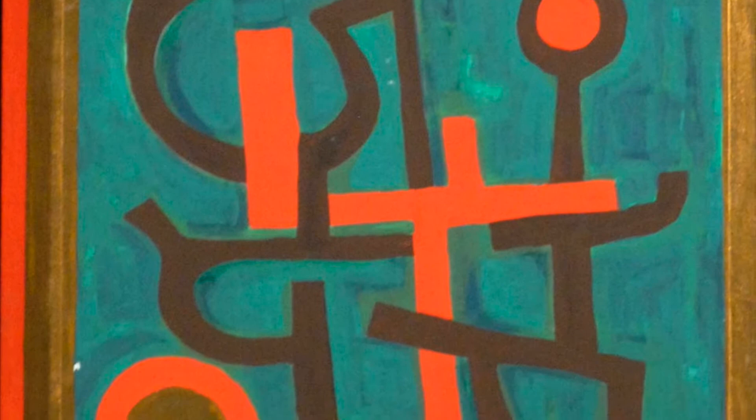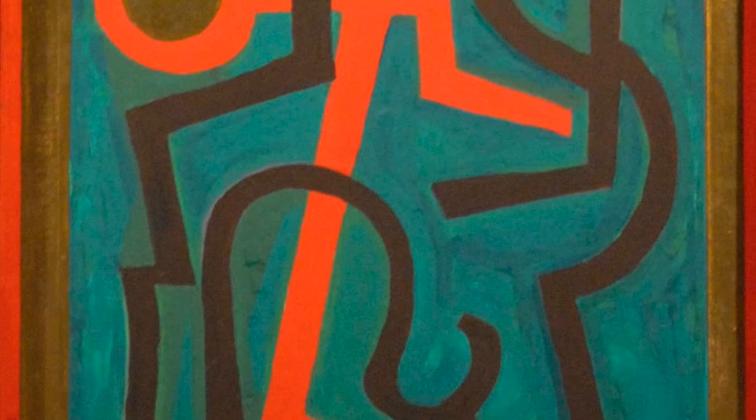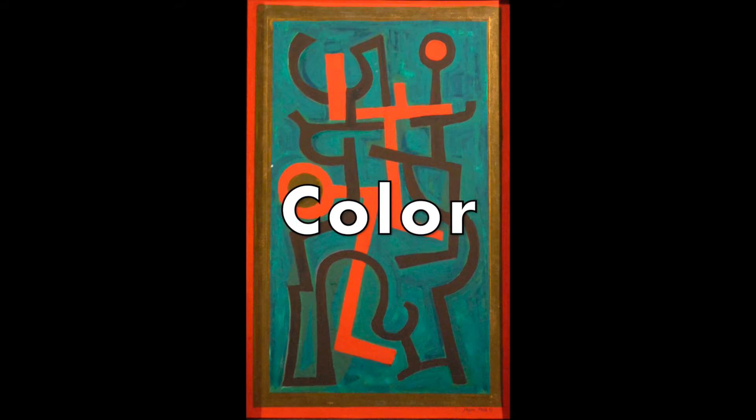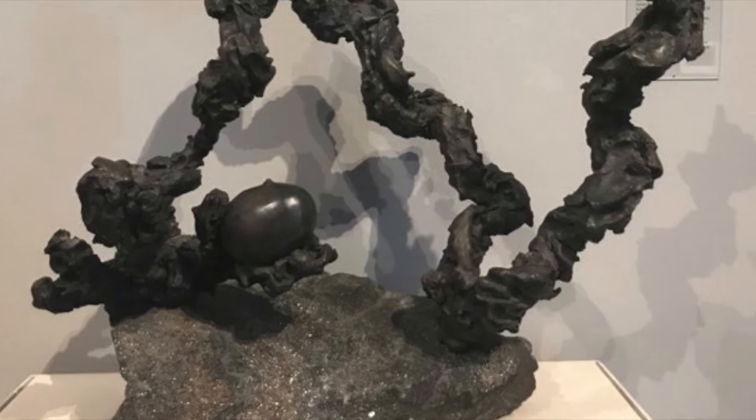Artists can create drama, energy, and action in an artwork by using contrast. They can do this by using complementary colors in a painting that contrast, like this red and green. It can also use contrasting values, like the super dark darks and the light lights in this drawing. This artist uses contrasting textures — notice the smooth texture of the egg and the rough texture of the rest of the piece.